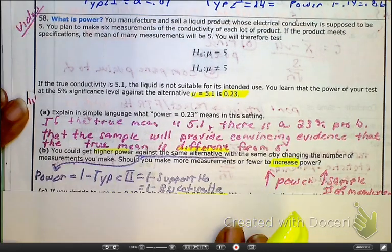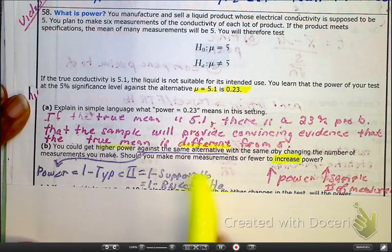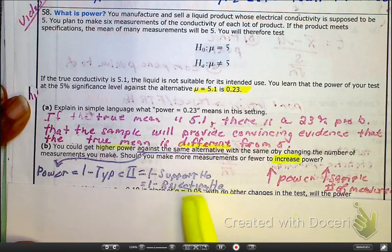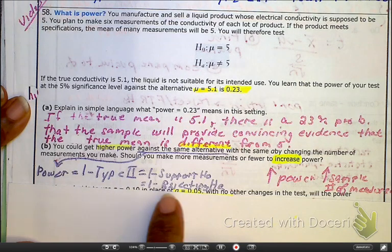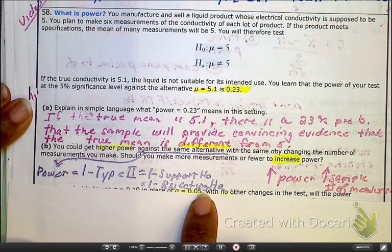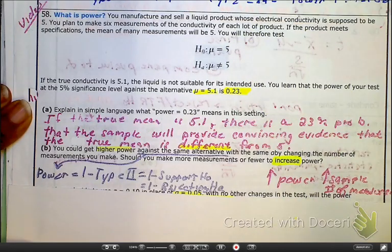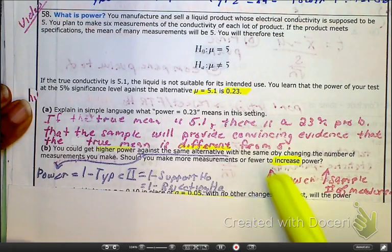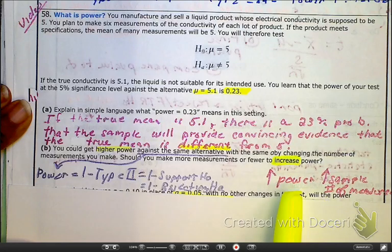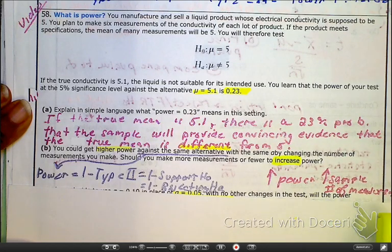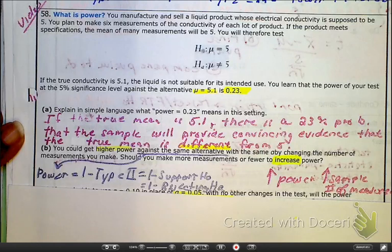Please remember, here, power is 1 minus type 2. I mentioned that a couple seconds ago. Power is the probability of 1 minus the rejection of the H0. So, just like we mentioned earlier, rejecting that it is equal to 5. And in order to increase the power, we have to increase the number of sample measurements that we have.